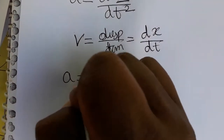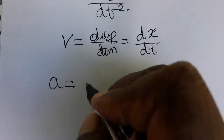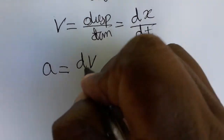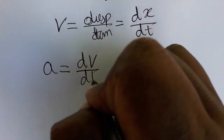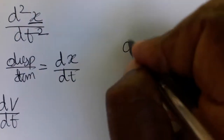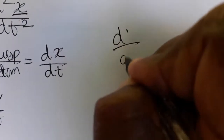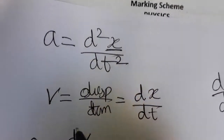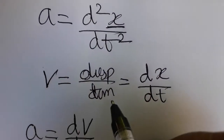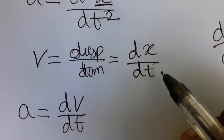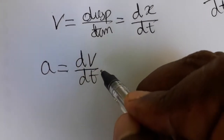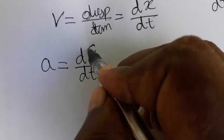Acceleration is equal to rate of velocity by time — it is a rate of change of velocity. d by dt is representing rate of change. So velocity is a rate of change of displacement, and acceleration is a rate of change of velocity.